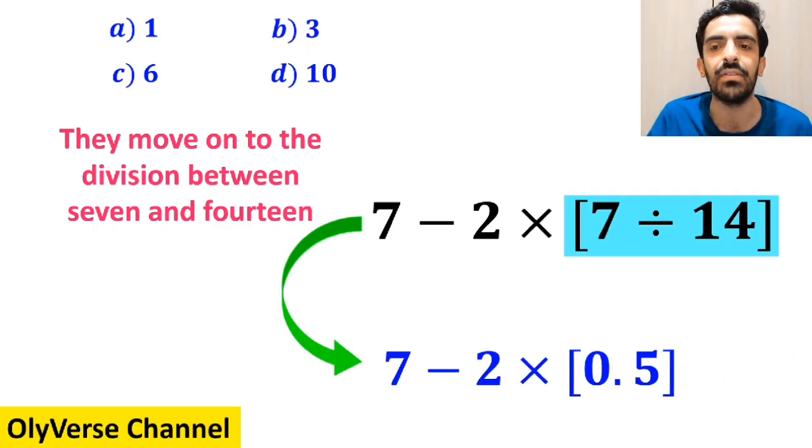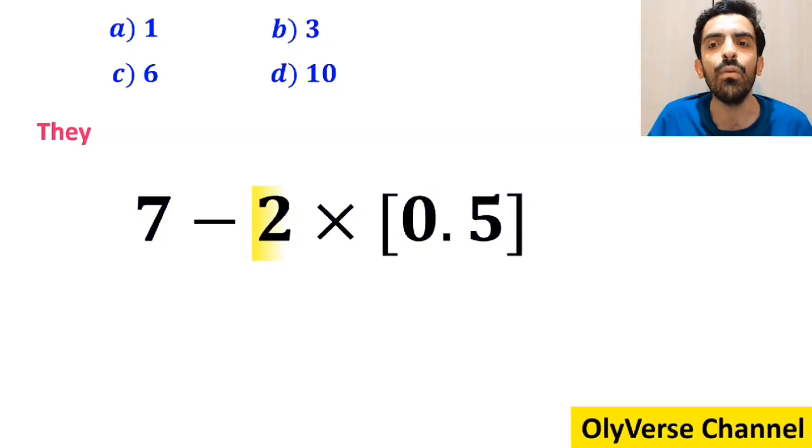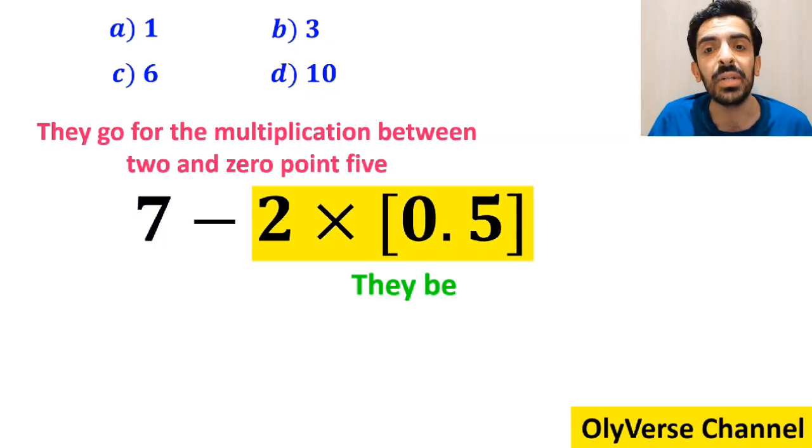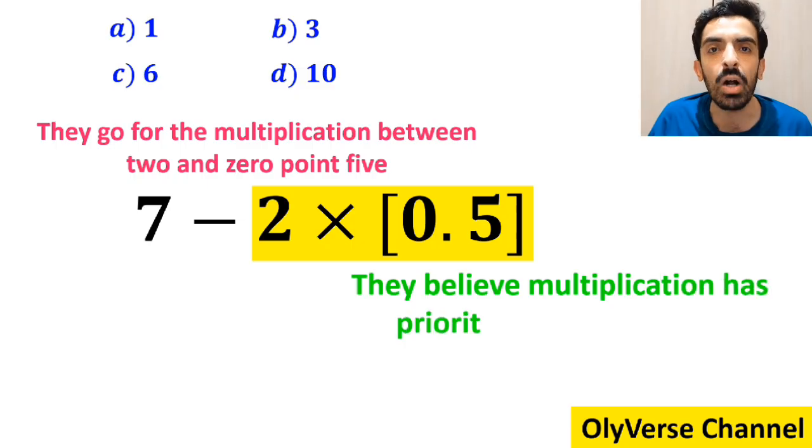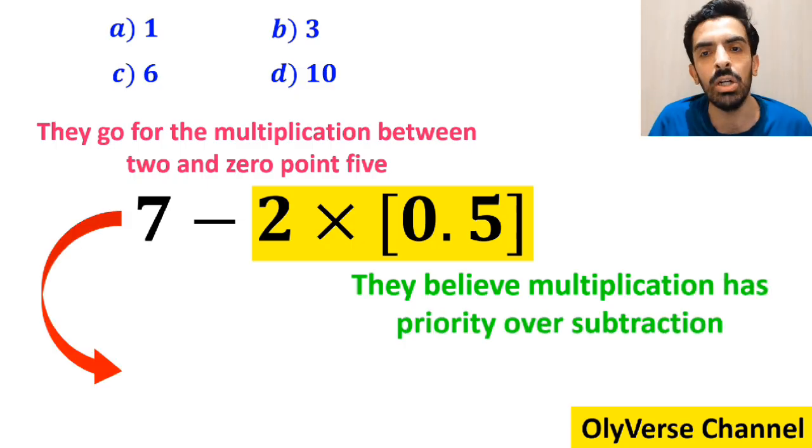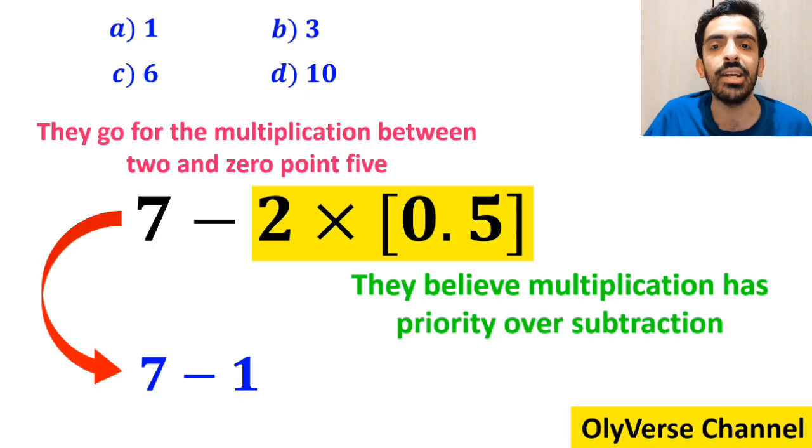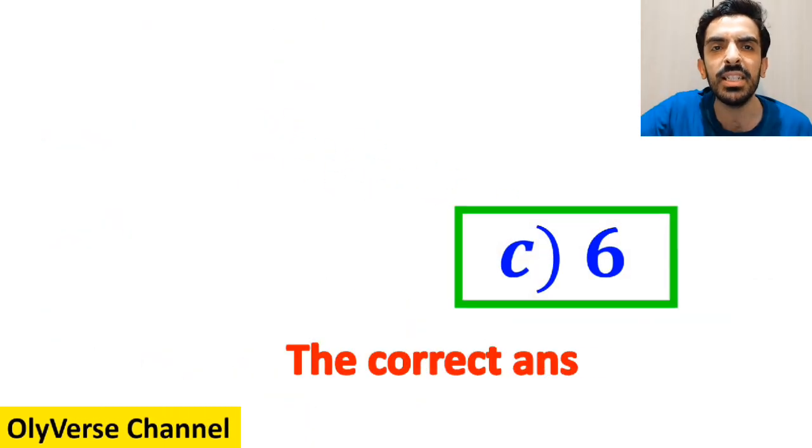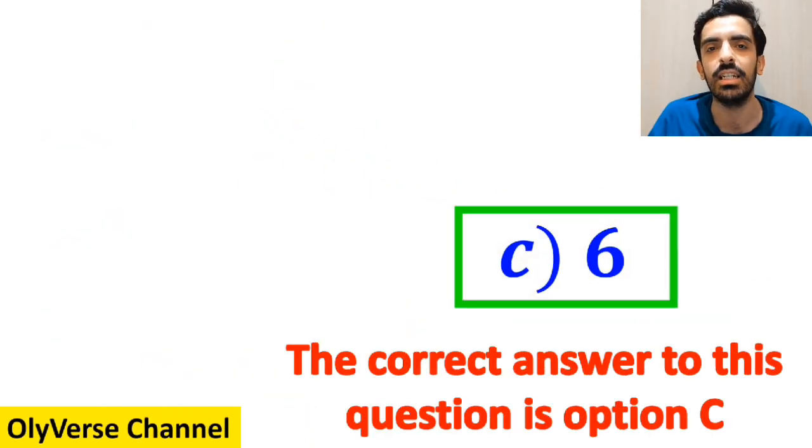And the next step, they move on to the division between 7 and 14, which simplifies this expression to 7 minus 2 times 0.5. Then they go for the multiplication between 2 and 0.5, because they believe multiplication has priority over subtraction. So instead of this expression, they write 7 minus 1, which finally gives them the answer 6.